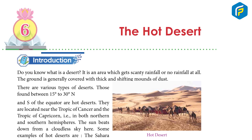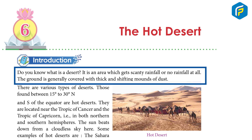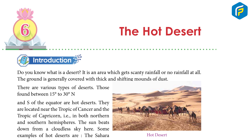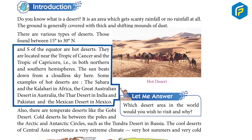The Hot Desert. Introduction: Do you know what is a desert? It is an area which gets scanty rainfall or no rainfall at all. The ground is generally covered with thick and shifting mounds of dust. There are various types of deserts. Those found between 15 degrees to 30 degrees north and south of the equator are hot deserts. They are located near the Tropic of Cancer and the Tropic of Capricorn.